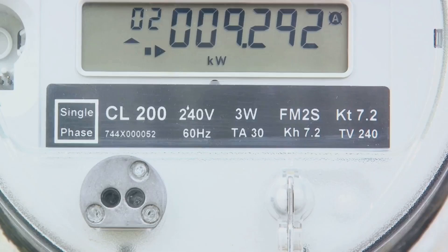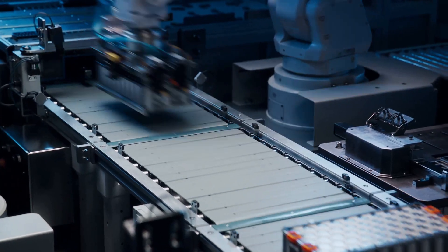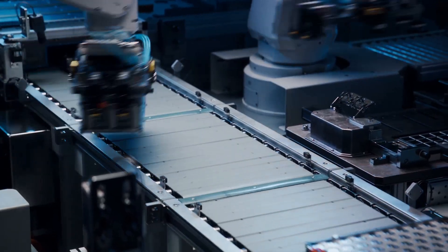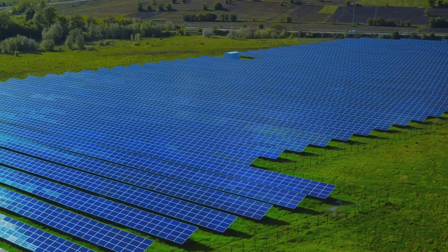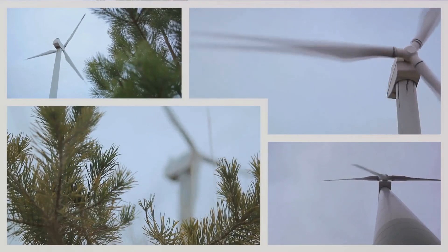It's like running your electricity meter backwards. This system essentially makes your utility company a kind of energy storage unit, storing your surplus energy for you to use later. It's a fantastic way to maximize the benefits of your renewable energy system, reduce your electricity bills, and contribute to sustainable living.